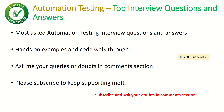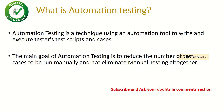What is automation testing? Automation testing is a technique of using an automation tool to write and execute test scripts and test cases. The main goal of automation testing is to reduce the number of test cases done manually, and not eliminate manual testing altogether. This is a very important question — interviewers want to know your understanding and approach to automation testing. You can also give examples of automation tools like Protractor, Selenium, or QTP.